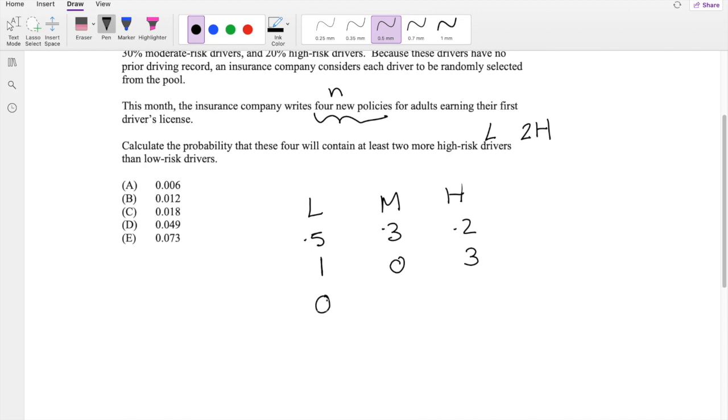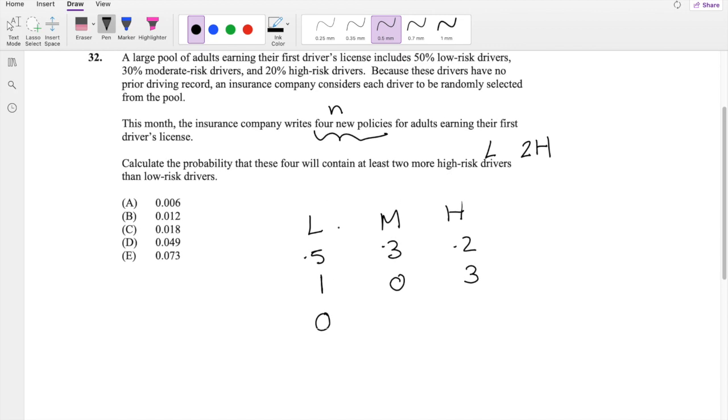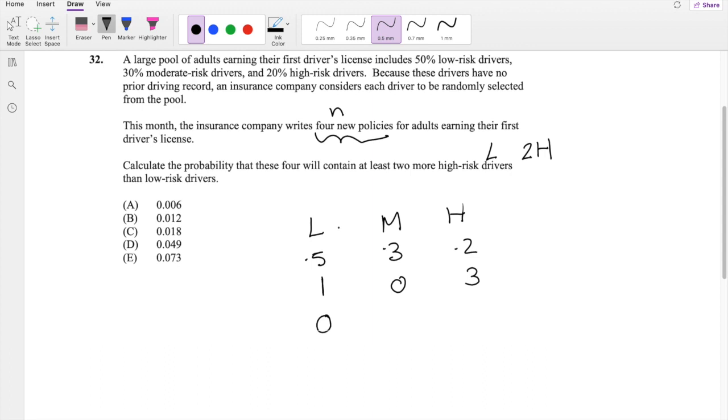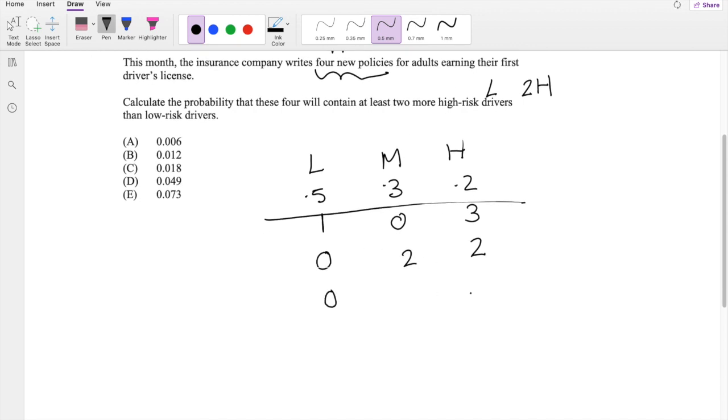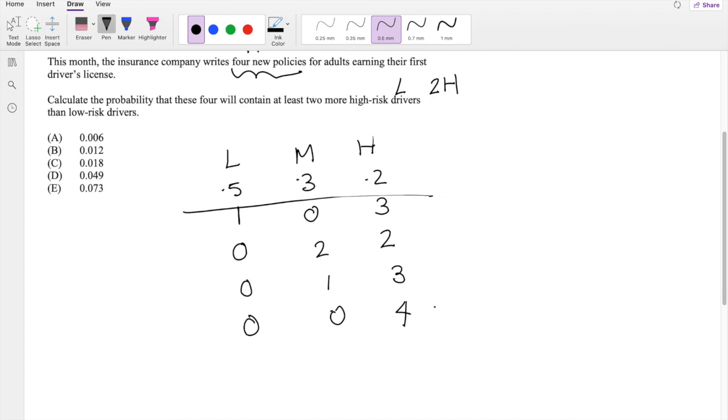However, if there is zero low risk drivers, then there could be two high risk drivers, and if there's two, then there's two more medium risk drivers. If there are three high risk drivers, then there could be one more medium risk driver. And lastly, all four could be high risk drivers with no medium risk drivers. So those are our four choices.